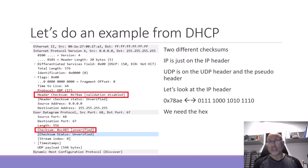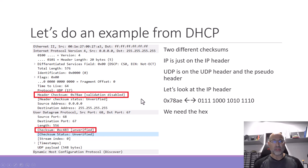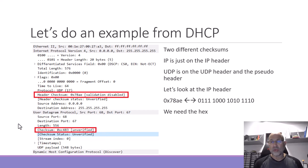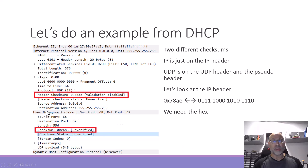Let's do an example from a DHCP packet — one grabbed in a lab. We can see that the top red box is the IP header checksum, which is what we're going to calculate. There's also another checksum in the same packet for the UDP header and the pseudo header. So one packet has two different checksums.